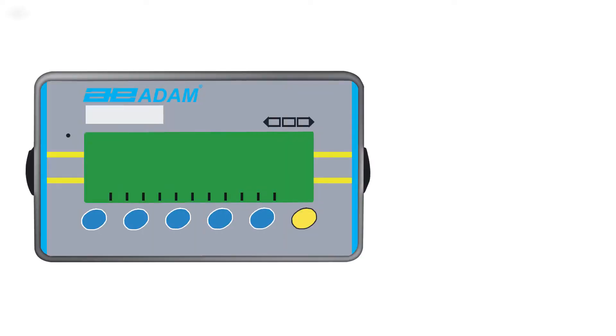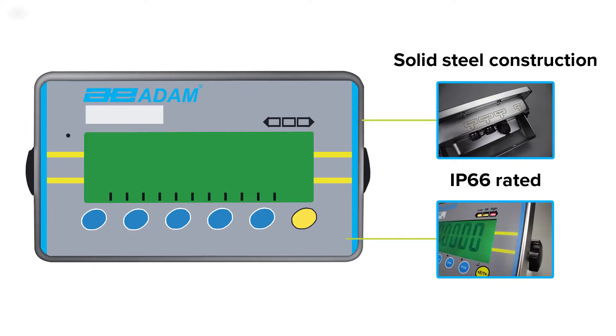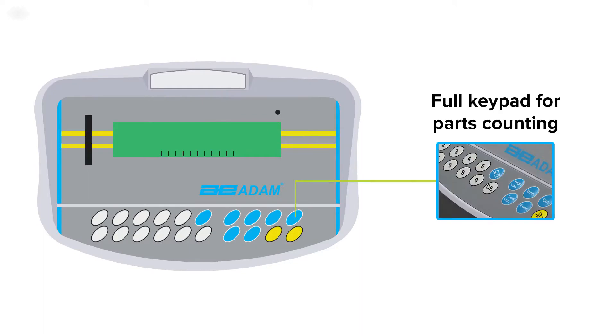The AE402 indicator is constructed of stainless steel and is sealed for use in dusty or wet environments. The GK indicator offers a full keypad for entering preset tares or samples for parts counting.